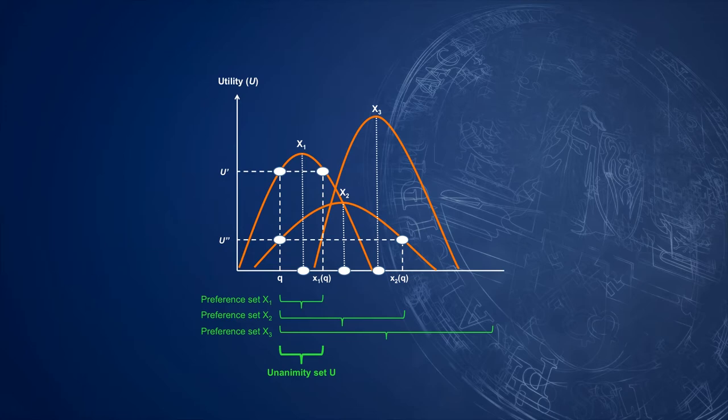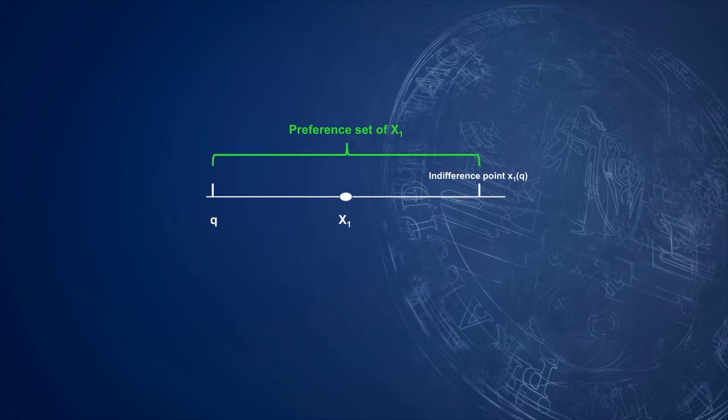This logic becomes clear when zooming into the preference set of the first veto player. This player prefers all points in the green area to the status quo. This means that a proposal P1, which is outside the set, is not preferred. This player will veto it. A proposal P2, however, is preferred. It will not be vetoed. Such a proposal will be adopted. Of course, this logic is based on the existing status quo. If the status quo changes, the preference set will change, and also the win set.